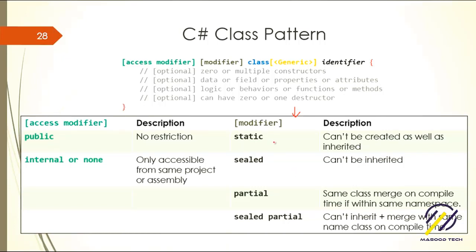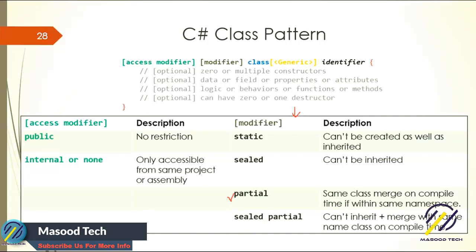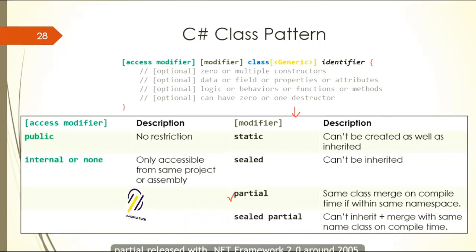Static we have talked very detailed about—you cannot create it as well as inherited. Sealed means that you cannot inherit it. Partial is my favorite—I really asked this question in interviews. What partial does is if you have classes in the same namespace, at compile time they're just merged. If you go to MSDN you'll see some excellent examples.